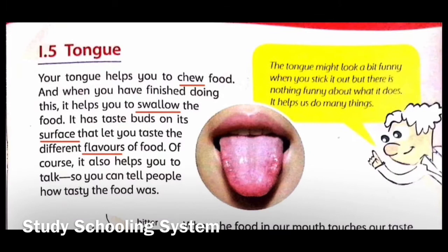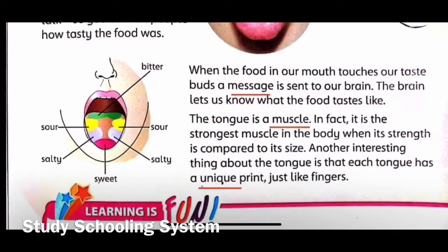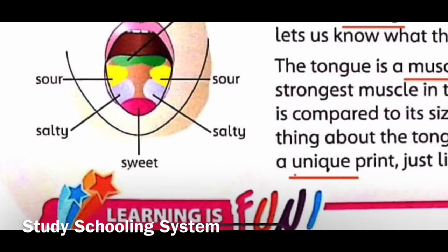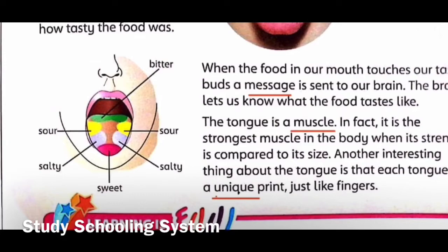We eat food and swallow food with the help of our tongue. It has taste buds on its surface that let you taste the different flavors of food. We can taste food because of our tongue, because we have taste buds on the surface. So how many taste buds do we have? We have four taste buds: bitter, sour, salty, and sweet.